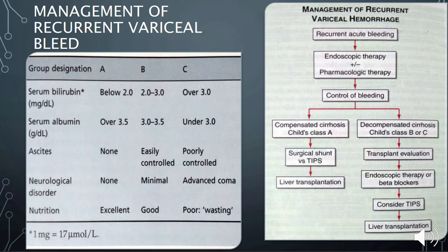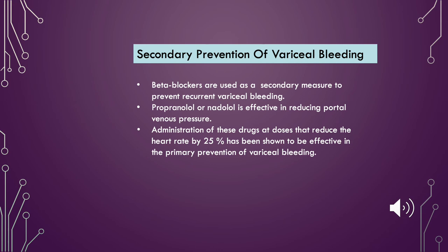The Child-Pugh scoring provides a forecast of the increasing severity of a patient's liver disease and the expected survival rate. It is also referred to as the Child-Pugh classification, the Child-Turcotte-Pugh calculator, and the Child criteria. Based on the scoring, the pathway for management of variceal bleed is determined. For the secondary prevention of variceal bleeding, beta-blockers are used. Propranolol or nadolol is effective in reducing portal venous pressure. Administration of these drugs at doses that reduce heart rate by 25% has been shown to be effective in the primary prevention of variceal bleeding and also for secondary prevention.